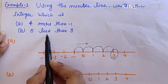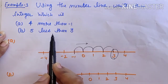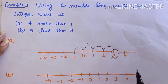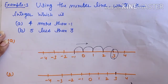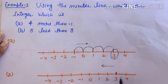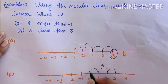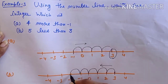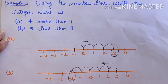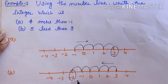Next: 5 less than 3. 'Less than' means we subtract, so we move left side. We mark 3 on the number line and move 5 times to the left: 1, 2, 3, 4, 5. Our answer is minus 2. The integer which is 5 less than 3 is minus 2.